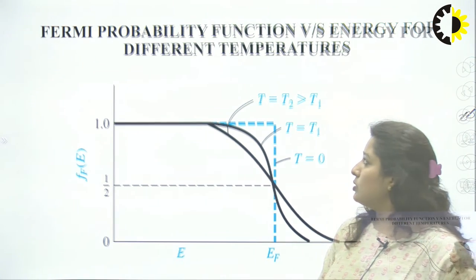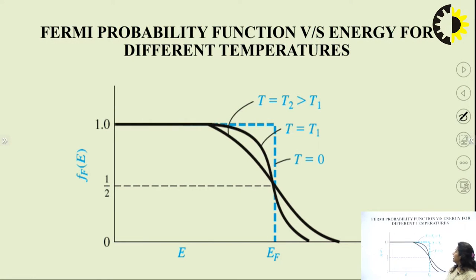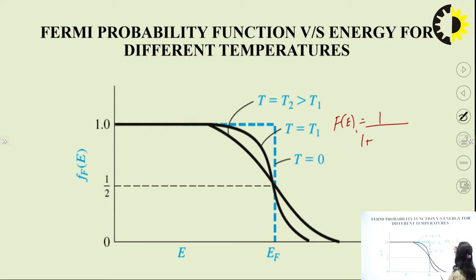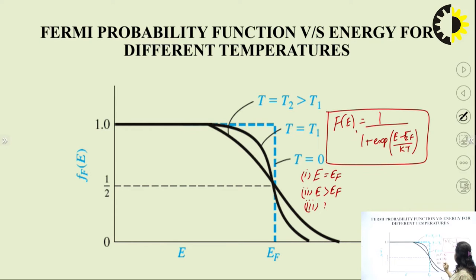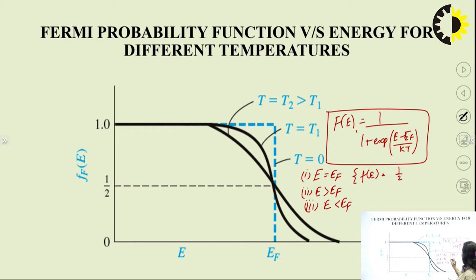The first slide shows the Fermi probability function versus energy at different temperatures. We have already discussed Fermi-Dirac distribution, which is f(E) = 1 / (1 + exp((E − E_f) / kT)). We have three cases: the first case is when E equals E_f, the second is when E is greater than E_f, and when E equals E_f, f(E) comes out to be one-half.